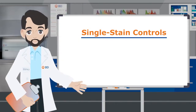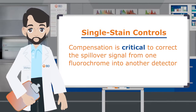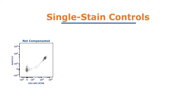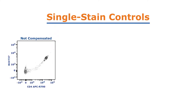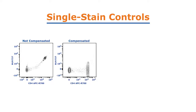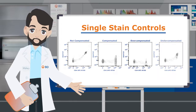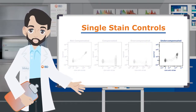Single stain controls. When performing multicolored flow cytometry, compensation is critical to correct the spillover signal from one fluorochrome into another detector. This plot shows an uncompensated sample stained with CD4 APCR700 only. Spillover from APCR700 into the BUV737 detector may lead to misinterpretation of this data as a double positive population. Running single stain controls — such as cells individually stained with all the antibodies in the panel — is required to calculate compensation and subtract non-specific signal. Be aware that use of improper controls may lead to over or under compensation and subsequent inaccurate data interpretation.